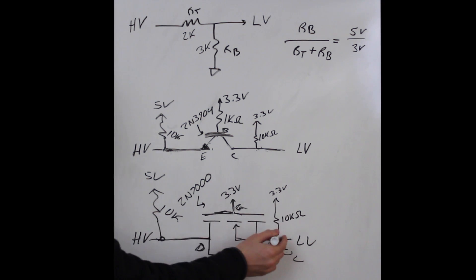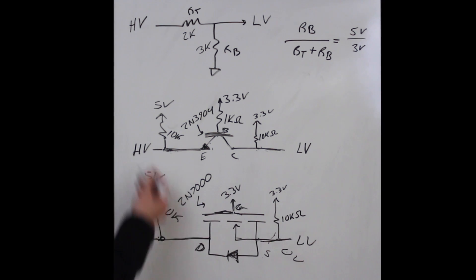If we go low, 0 volts, we've just created a VGS voltage, we've turned the MOSFET on, and that zero volts carries right through and the high voltage side goes low. Now let's go to the scope and see these three circuits in action.